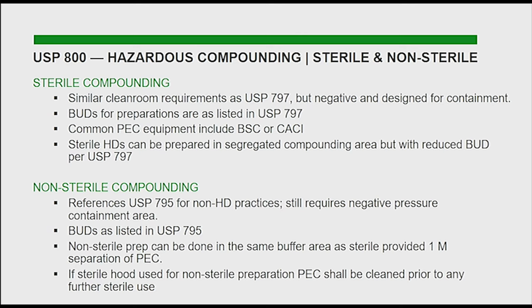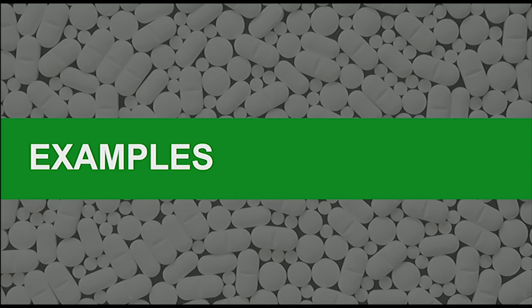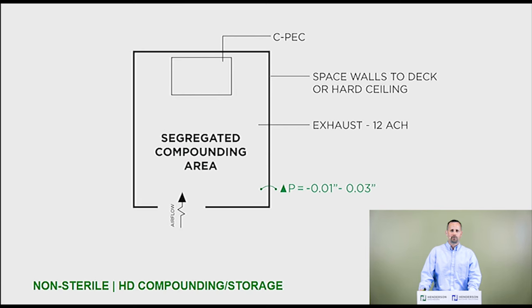A non-sterile compounding room needs to be designated as such to make sure everyone understands. So let's walk through some examples and look at some pictures of what these areas could look like. These are all very schematic — nothing from an actual job. For instance, this is what a segregated compounding area should look like. A segregated compounding area for a hazardous drug — this would be your non-sterile hazardous drug compounding room — could also double as your hazardous drug storage room. The key requirement is that you need to have this space at 12 air changes exhausted at all times.